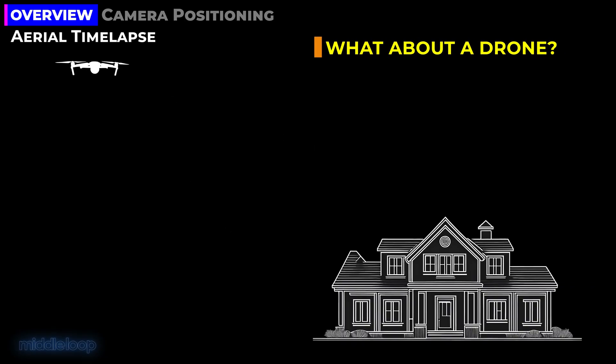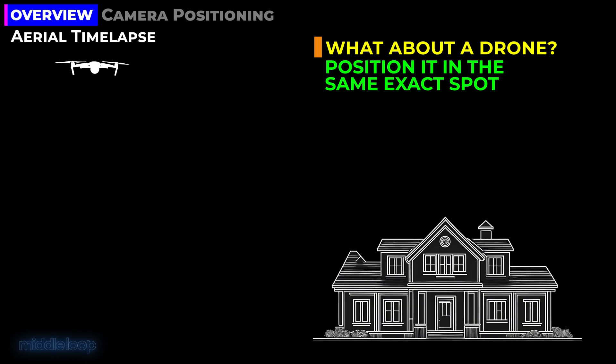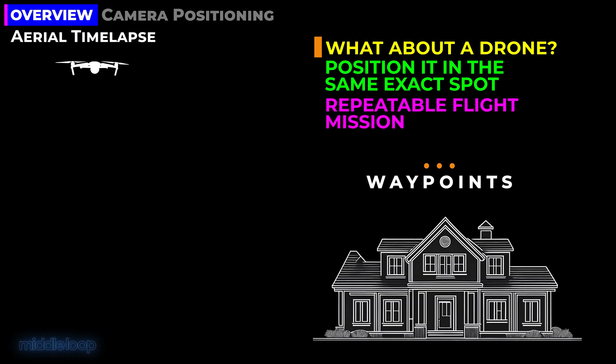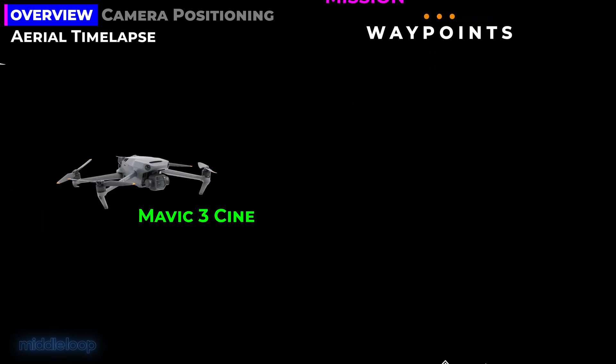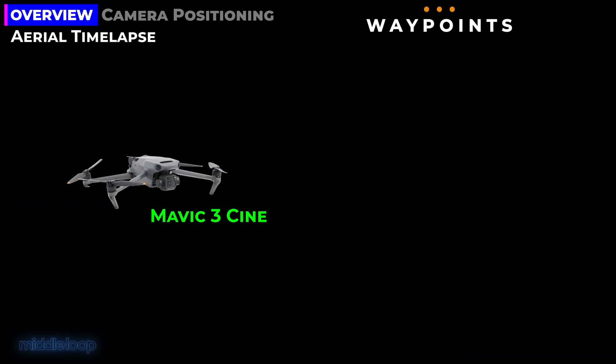When using a drone, especially over such a long period of time, the key is to try to get the drone's camera into the exact same position in a repeatable flight mission. For this, we'll be using a feature called Waypoints. The drone we use to produce our video is the DJI Mavic 3 Cine, which has this feature built in. Many do.